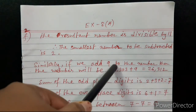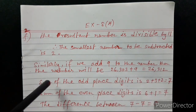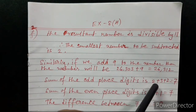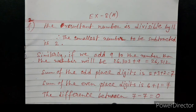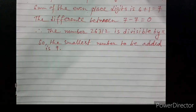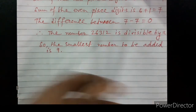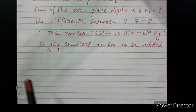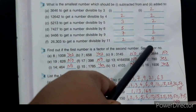If we add 9 to 26,303, we get 26,312. The odd place sum is 2 + 3 + 2 = 7 and the even place sum is 6 + 1 = 7; the difference is 7 − 7 = 0. So 26,312 is divisible by 11. Therefore the smallest number to be added is 9. We write 2 in the subtract column and 9 in the add column.